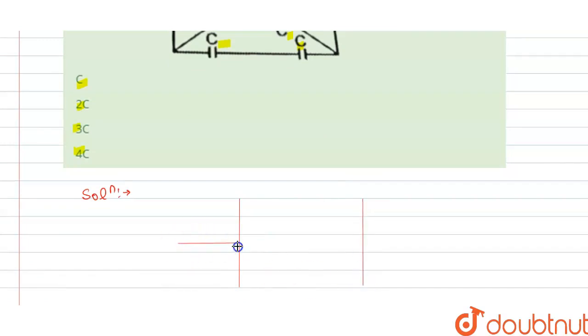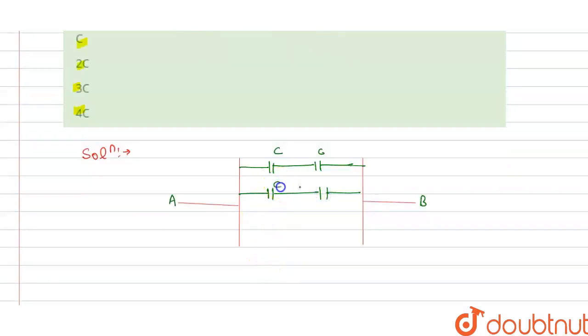So this is our A and this is B, and we have here capacitance C connected like this, and this is connected. So this is C and this is C, this is capacitance C and we have the C capacitance here. This is the equivalent circuit diagram for this.